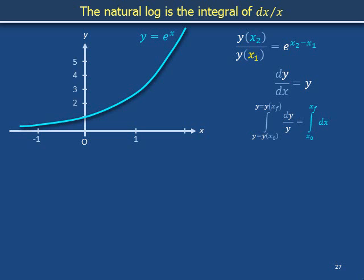If we were being careful, the integral dy over y would be written out as integral of 1 over y dy, to avoid suggesting that dy were some quantity that could be divided by y. The turquoise integral on the right, running from x equals x0 to xf, corresponds to the gray integral on the left, running from y equals y on x0 to y on xf.